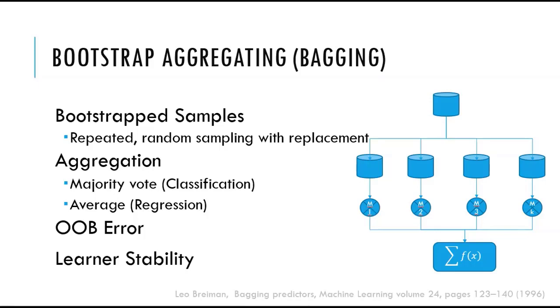Each of these bootstrapped sample sets is used to train a classifier. So roughly 37% of the examples in the training set will not appear in a particular bootstrap training. Let's call them out-of-the-bag examples.